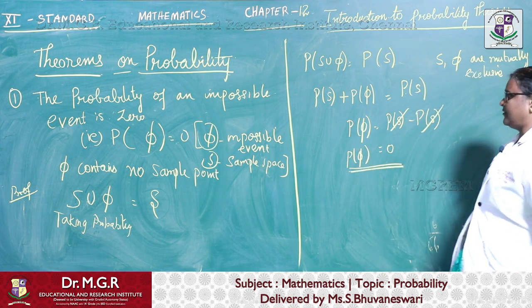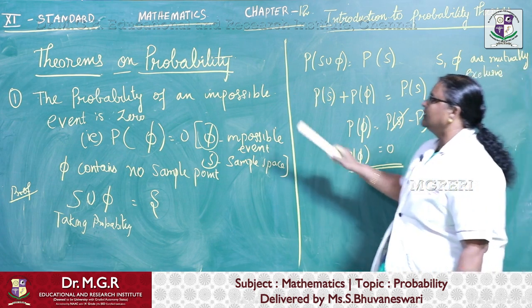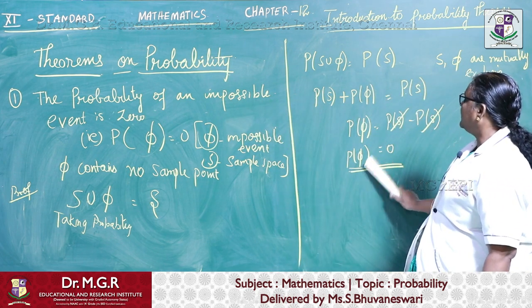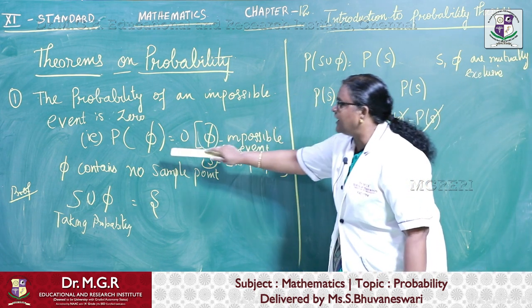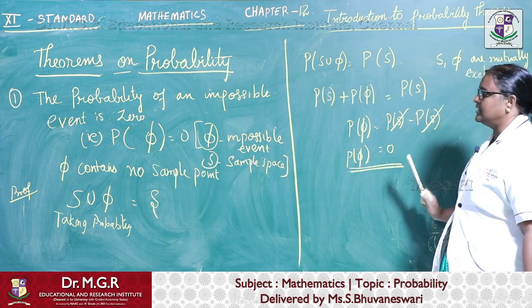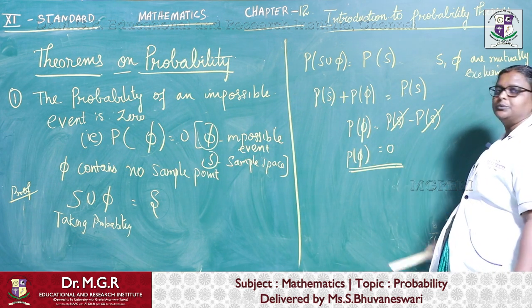Hence, the first theorem. So what is the first theorem? The probability of an impossible event phi is nothing but 0. So P of phi equal to 0.